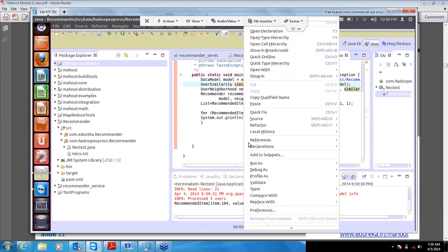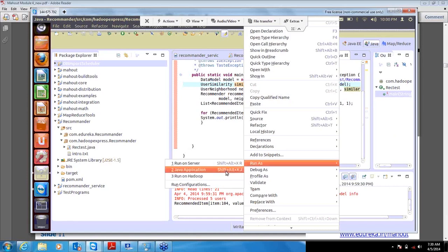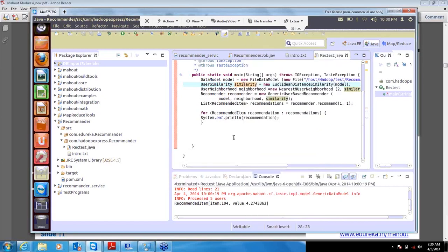If you can see, items suggested is still 104 because as I told you it's a very small dataset. But the preference value, if you remember last time it was showing around 4.25 something, and now it is showing 4.27, so a little increase in that scenario.